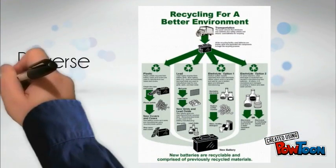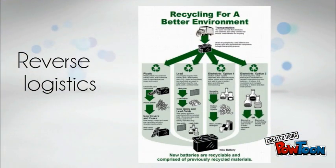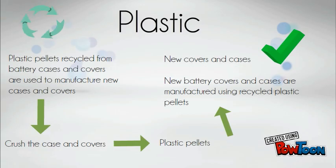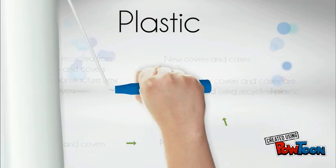Talking about reverse logistics, we have three materials that can be recycled. The battery cases and covers can be recycled. We need to crush the cases and covers and turn them into plastic pellets. Those pellets are sold to the manufacturer of battery cases, and the process begins again obtaining new ones.